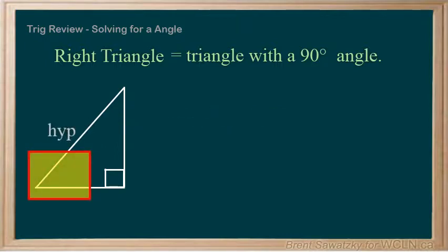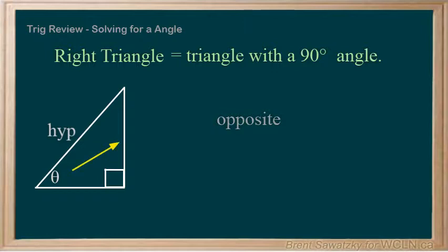Once we determine which angle we'll be looking for, and let's call it theta, we can determine that the opposite side is right across, or opposite from that angle, and the adjacent side is beside, or adjacent to, our angle.